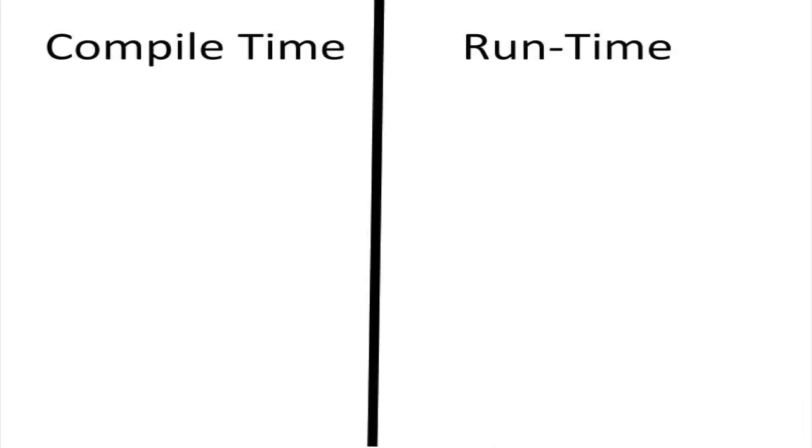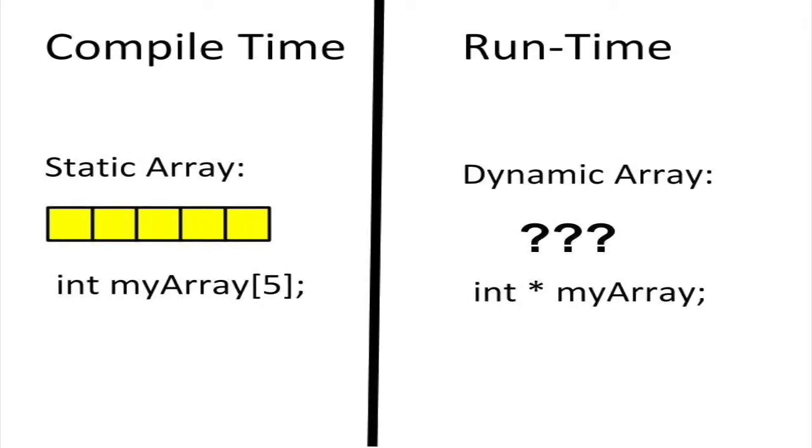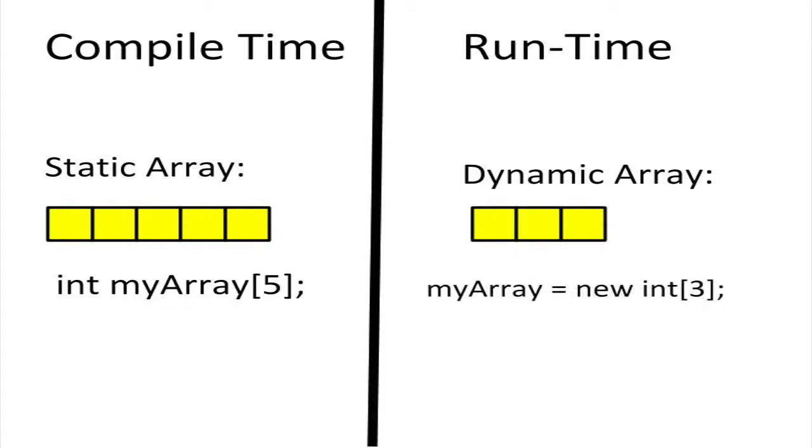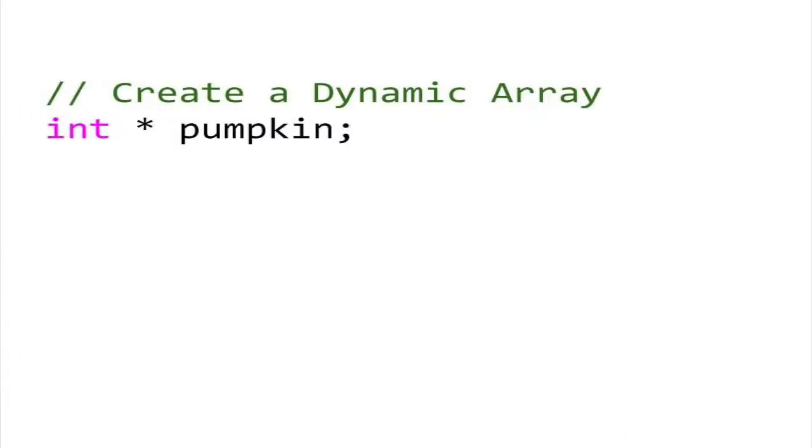When we create an ordinary static array, we have to specify the length at compile time, or by compile time. With the dynamic array, we can specify the array length at runtime.